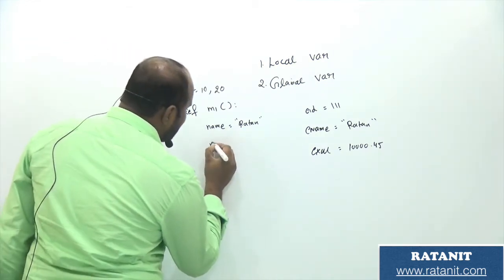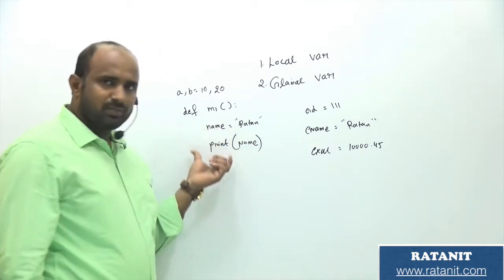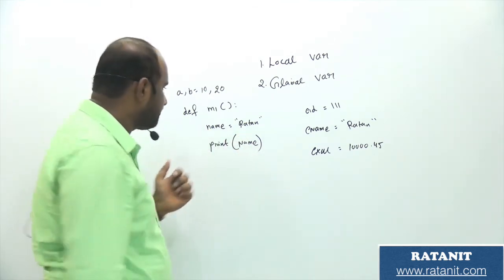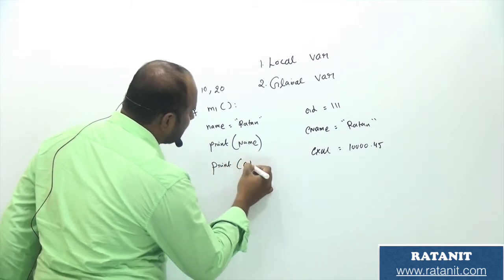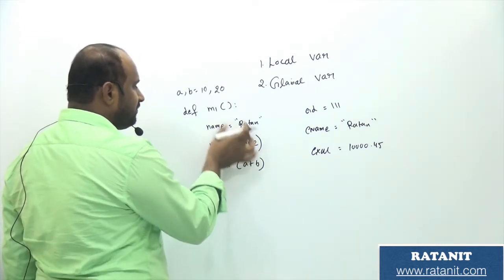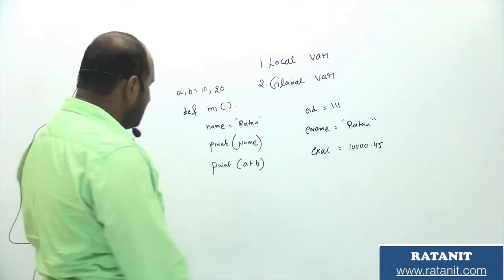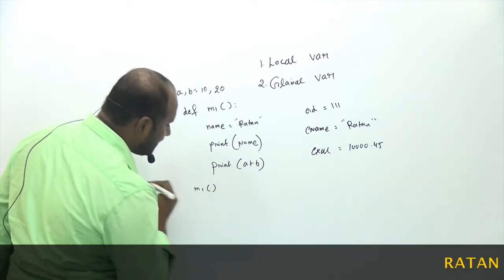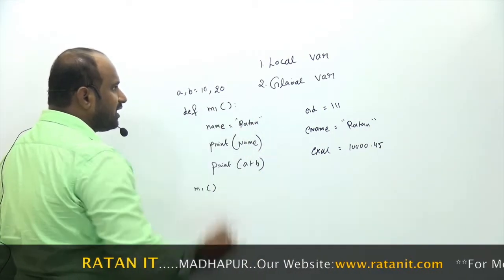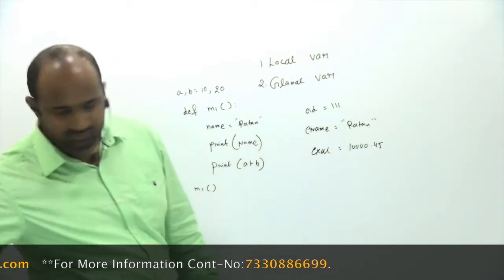Inside the function, I want to print the local variable. Simply use print(name) — the local variable will be printed. Next, print(A + B) — here global variables are added, so A + B equals 10 + 20 = 30 will be printed. Here, 'name' is the local variable and A, B are the global variables. Simply call the M1 function using M1(). Then M1 will be executed: Rathan will be printed for name, and 30 for A plus B. That is local versus global variables.